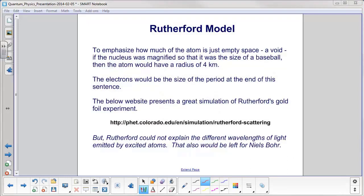To emphasize how much of the atom is just empty space, a void. If the nucleus was magnified so that it was the size of a baseball, then the atom would have a radius of 4 kilometers, or 4 times 10 to the 3rd meters. The electrons would be the size of the period at the end of this sentence.